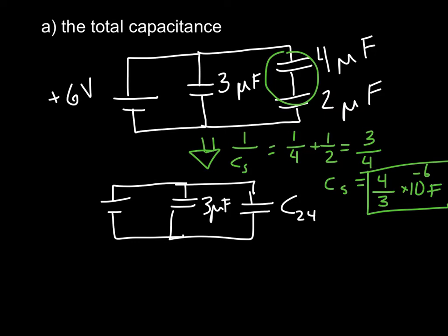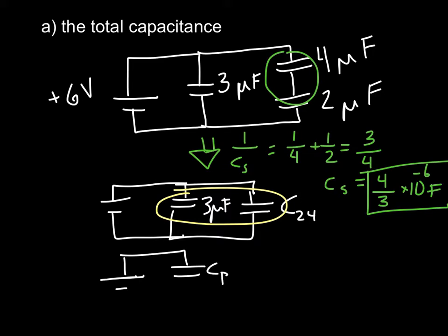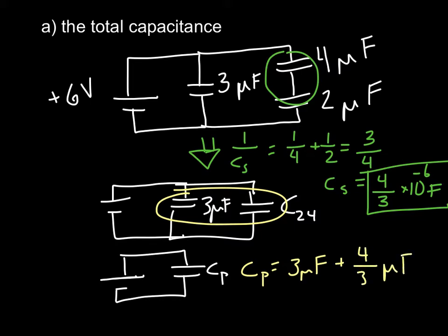Now we have one further reduction, because these two are wired in parallel. So redrawing: here's your battery, this is your C parallel, which is the C for the entire circuit. C parallel equals 3 μF plus 4/3 μF, which equals 4⅓ μF. That is how you get the total capacitance for the circuit, just by breaking it down.